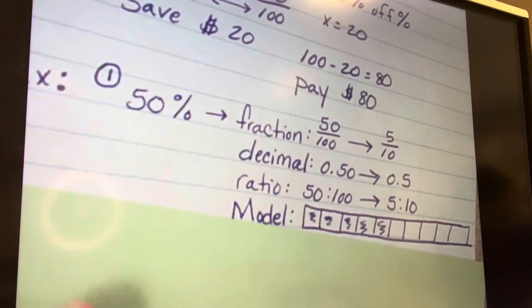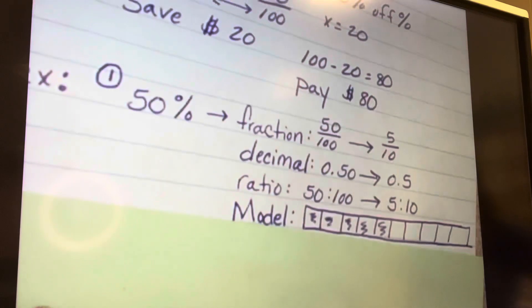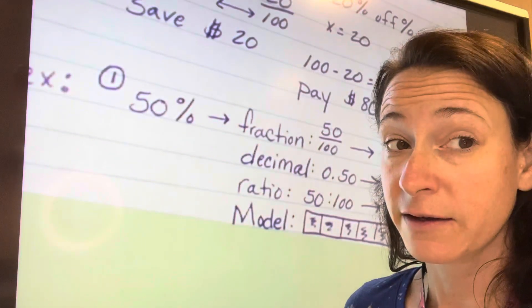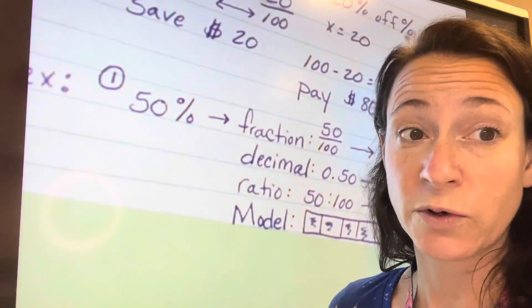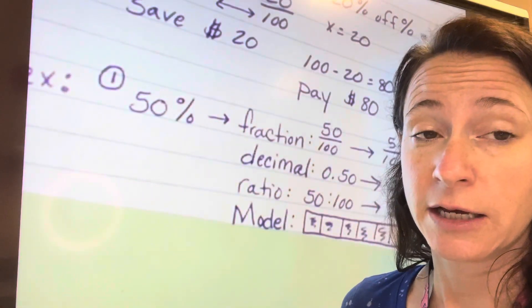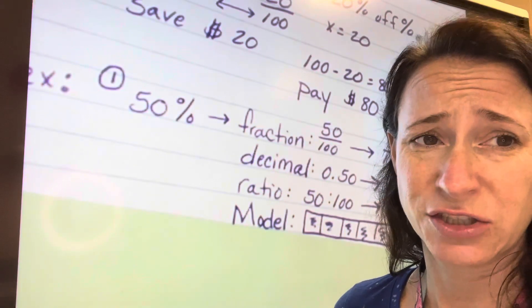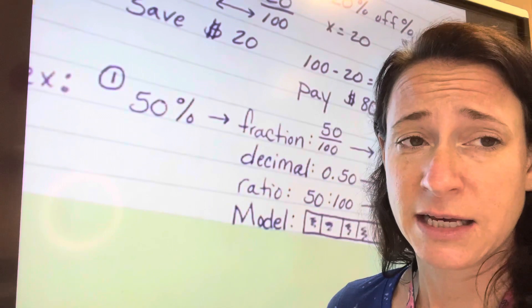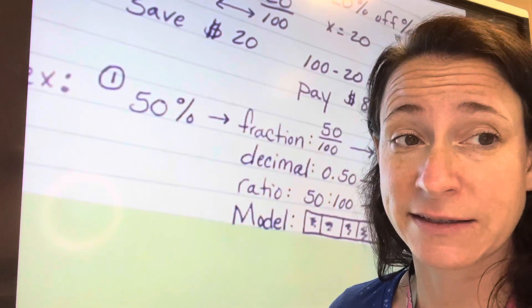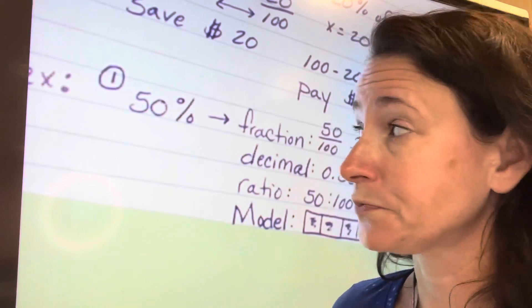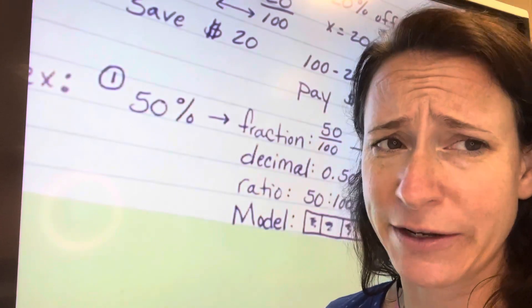Here I have 10 squares and I've shaded 5 in. It would be better to model the simplified percent ratio or percent fraction than the percent out of 100, because nobody wants to shade in 100 squares. If you can't simplify it, because sometimes that's going to happen, like if it's 47% off, you can't simplify 47 over 100 because 47 is a prime number.